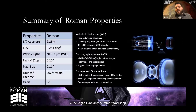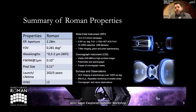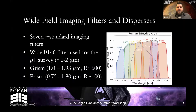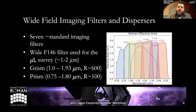There will be several main surveys. A high latitude survey will do imaging and spectroscopy over a thousand square degrees to study baryonic acoustic oscillations, weak lensing, and supernovae. There will also be supernova and microlensing surveys of smaller fields with repeated observations. Currently envisioned is roughly six months on the coronagraph for tech demonstration. The seven standard filters include a wide F146 filter covering one to two microns for the microlensing survey to maximize photon count, plus the grism and prism for redshift surveys and supernova identification.